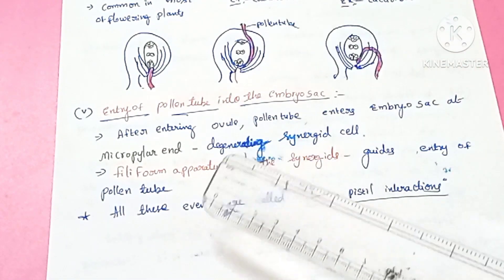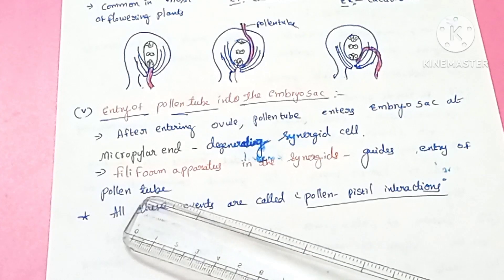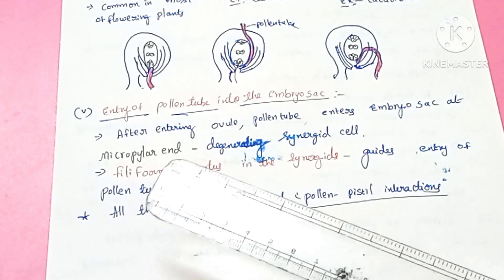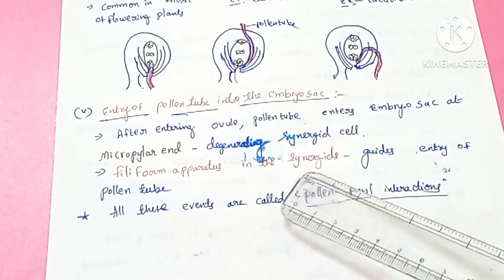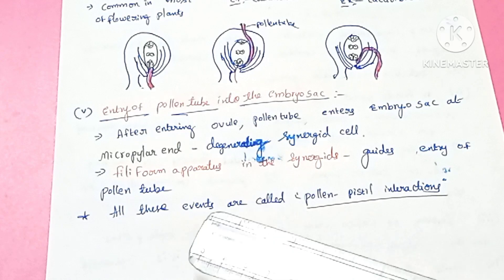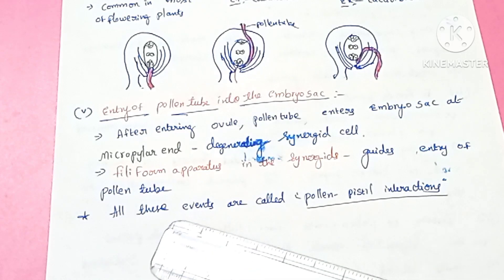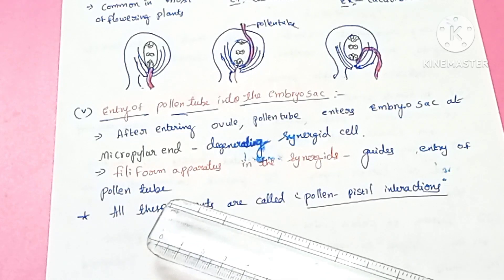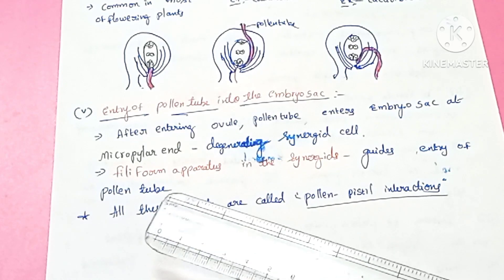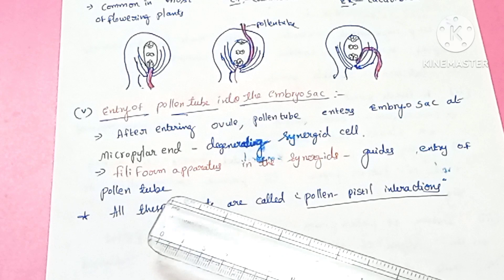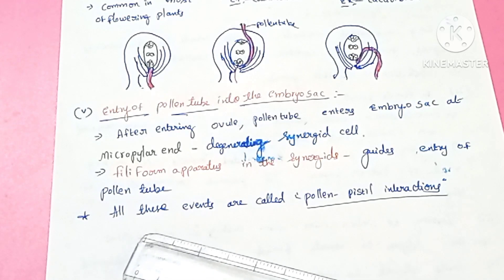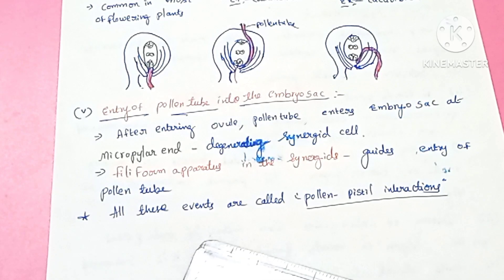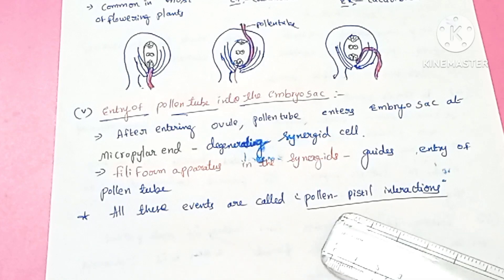The synergids consist of finger-like projections called filiform apparatus. These filiform projections guide the entry of the pollen tube into the embryo sac. All these events are collectively called pollen-pistil interactions.